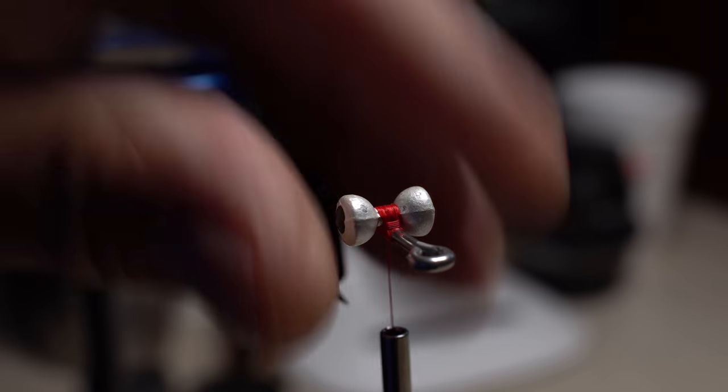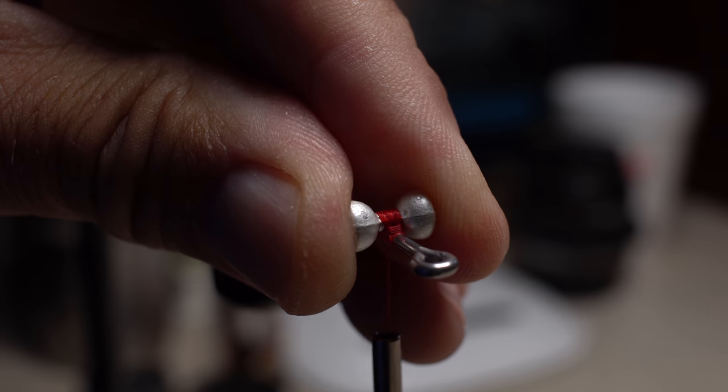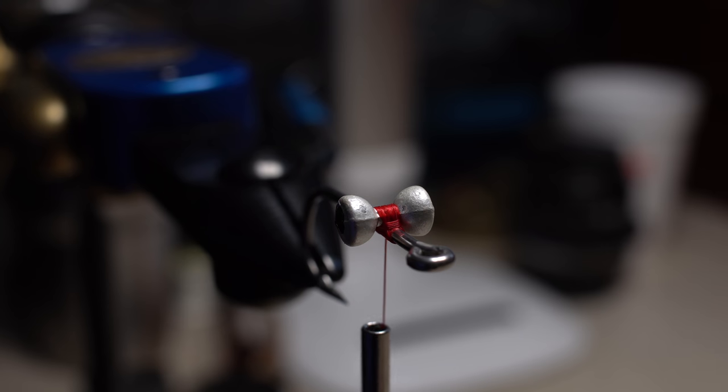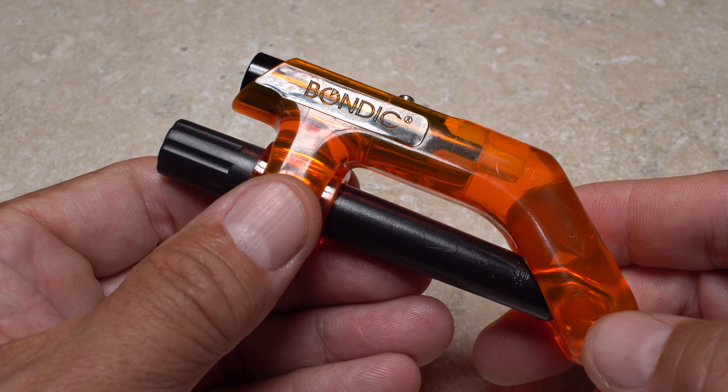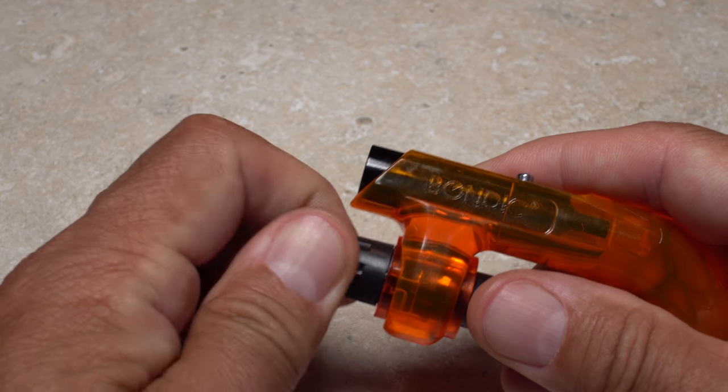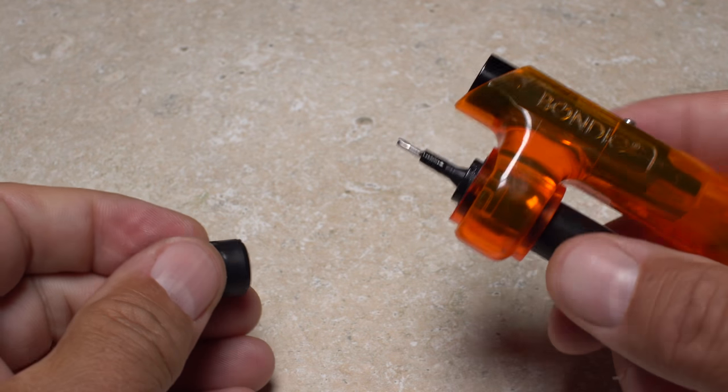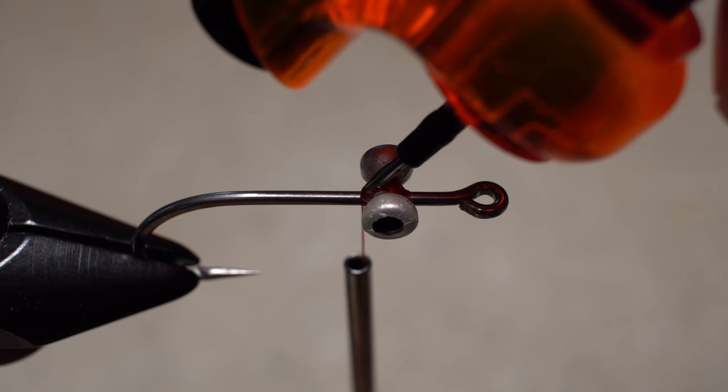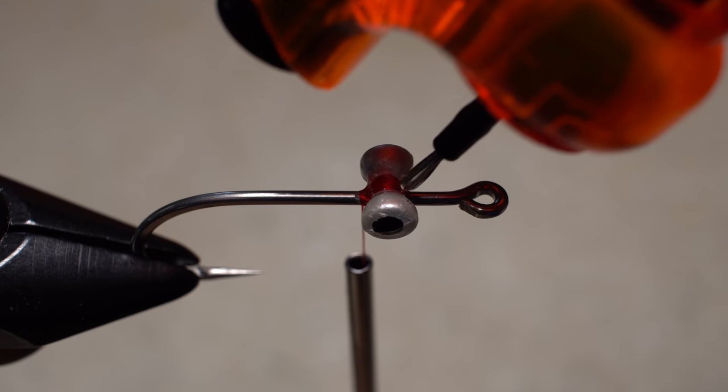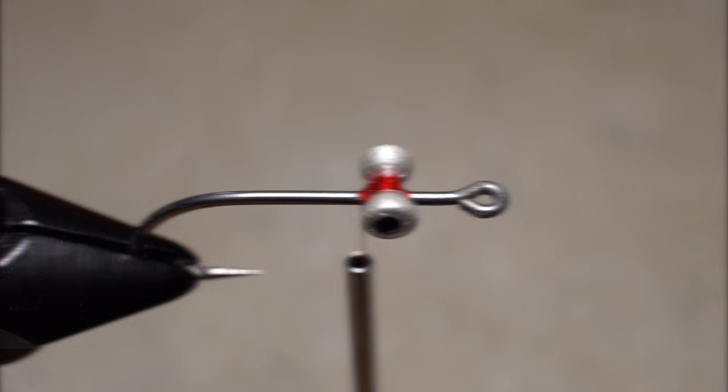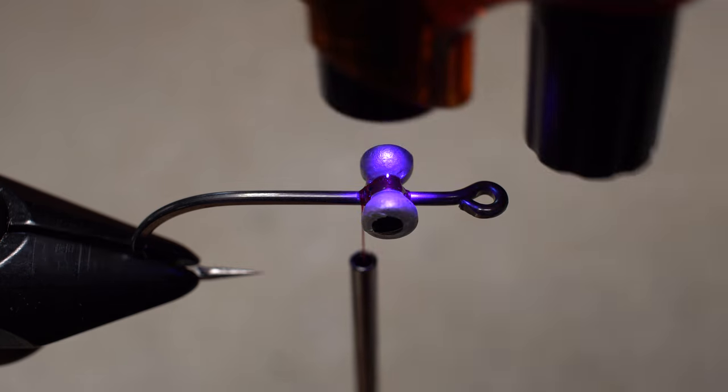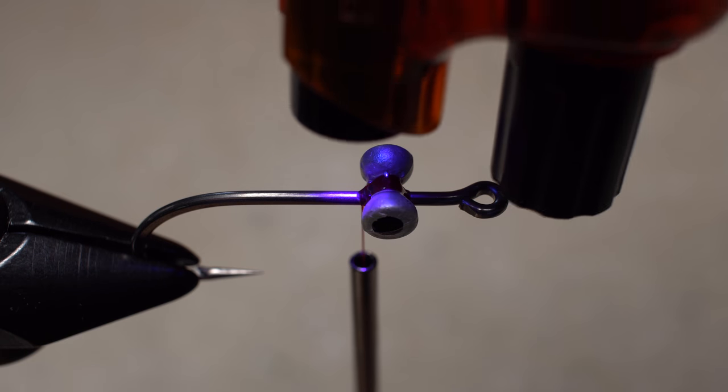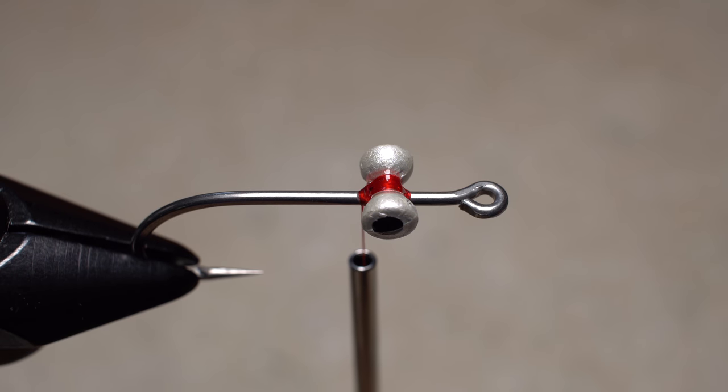It's a good idea to look straight down the hook shank to make sure the eyes aren't tilted to one side or the other. UV cure resin will really help to ensure the eyes stay where they're supposed to without rotating around the hook shank. An ample drop applied to the crossbar of the dumbbell should run down and soak into the thread wraps. Then, a shot with the UV torch will cure the resin to create an extremely robust connection.